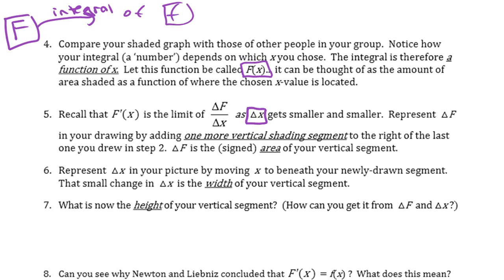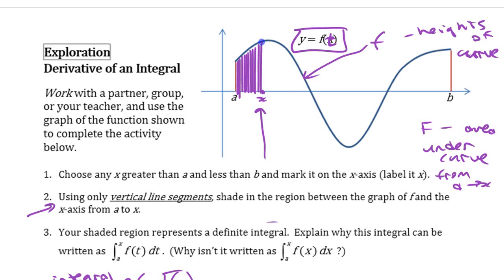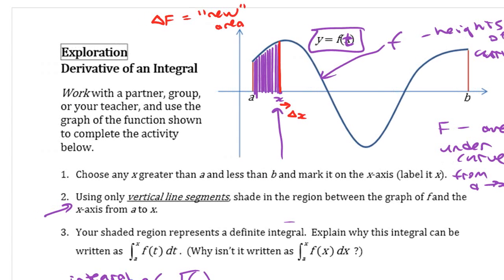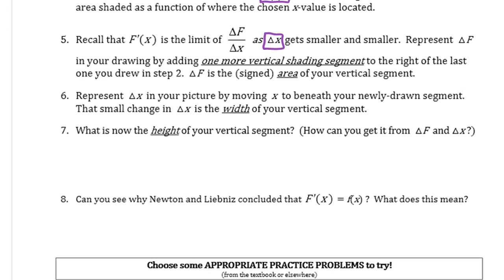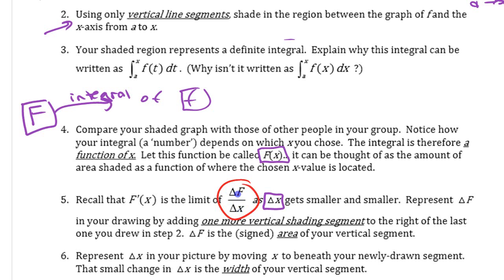The reason they had you shaded in with these skinny little segments is so that delta x can be small. Shade one more segment - if I shade one more segment here, that's kind of like I've changed x a little bit. I've moved it ahead a little bit. Delta x is how much I moved it and delta F is the new area that's there - my new little bit of area I added. That vertical line segment I'm going to draw with some thickness so we can think about it. The width is delta x, the area is delta capital F.